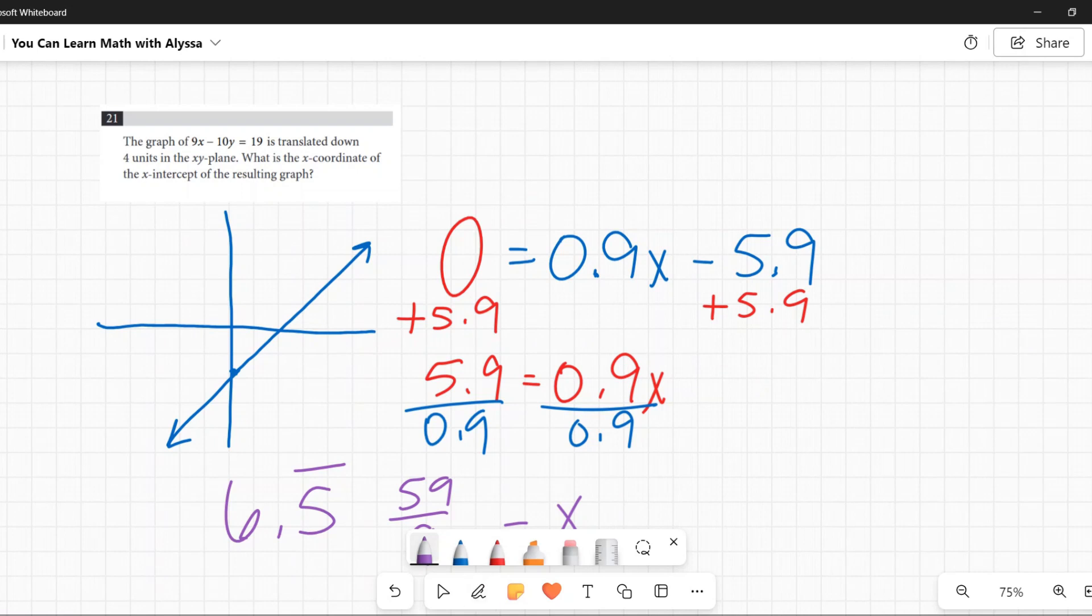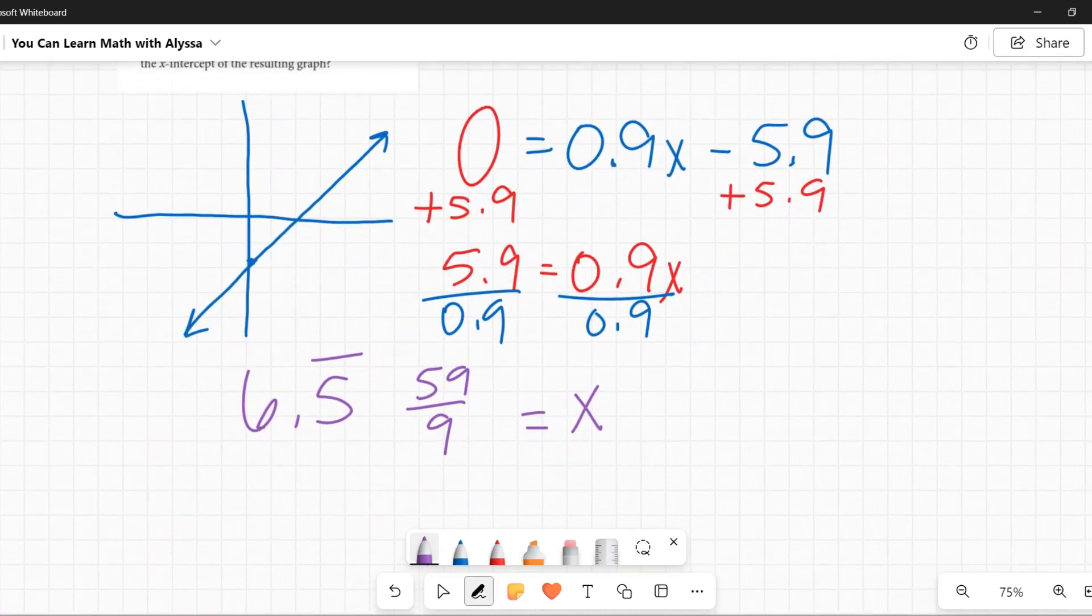Once you get to this point of 0.9x minus 5.9, once you get to that point, if you want to put it into Desmos and check the x-intercept, that is a viable strategy, absolutely. I just don't think it's a good idea to start with that red one. There is our answer, 6 and 5 ninths, 6.5 repeating, 59 ninths. All those are different ways of saying our same correct answer.